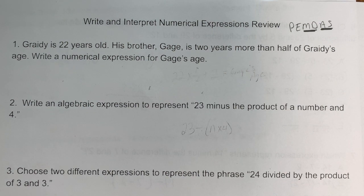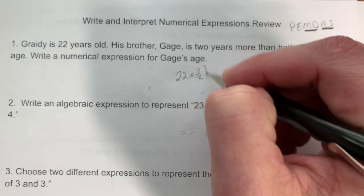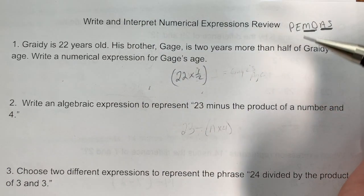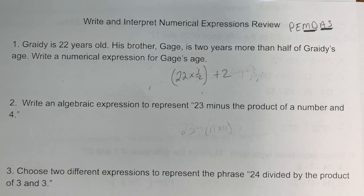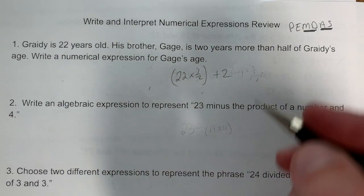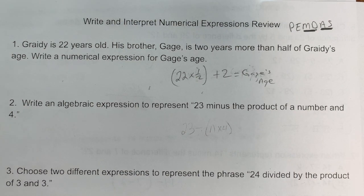Problem 1: Grady is 22 years old. His brother Gage is two years more than half of Grady's age. First we find half: 22 times one-half in parentheses, then add two more years: (22 × 1/2) + 2. We calculate half first, then add two years to get Gage's age.